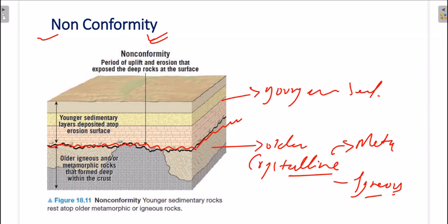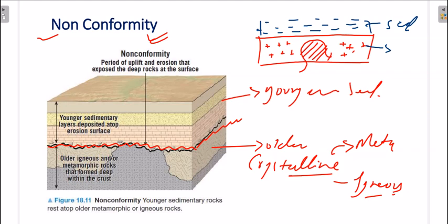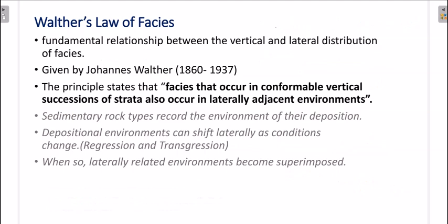For example, there was an igneous intrusion or metamorphic country rock; after some time erosion happened, followed by deposition of sandstone or shale — a sedimentary rock — on top. The above layer is sedimentary and the below layer is metamorphic or igneous: this is nonconformity. The surface is easily discernible. Remember: nonconformity = older igneous/metamorphic rocks below, younger sedimentary rocks above.